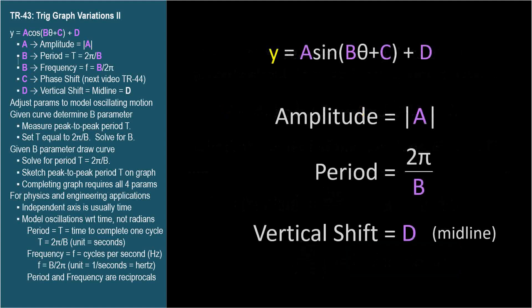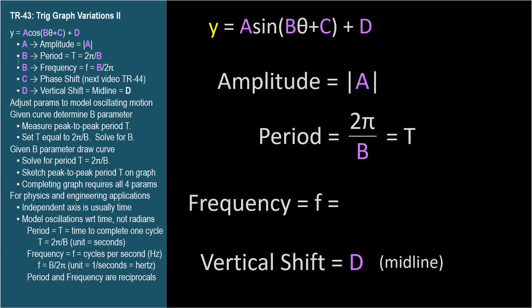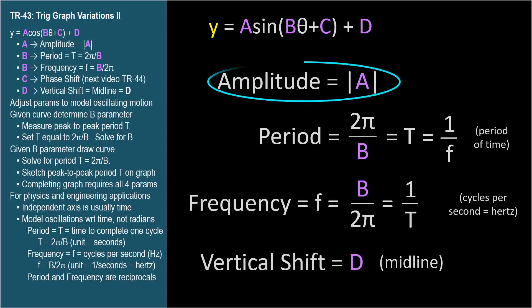Let's take another look at our parameter summary chart. We can add capital T as a standard symbol for period, and we can introduce a new vocabulary word, frequency, whose standard symbol is lowercase f. Frequency is the reciprocal of period, so b over 2 pi. The period represents a period of time. The frequency represents cycles per second. The period's unit is seconds, and the frequency's unit is hertz, which is naturally the reciprocal of seconds, or 1 divided by seconds. So amplitude is still the absolute value of parameter a, parameter b determines both the period and frequency of a wave, since they're reciprocals, and parameter d is still the vertical shift or midline.